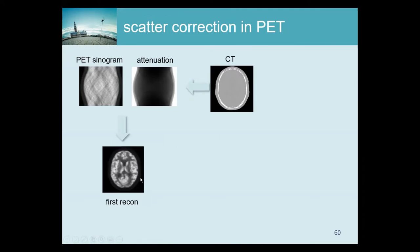With this information we can make a first MLM reconstruction. Now this image is going to have too much activity, and the reason is that part of the counts in the sinogram are not trues but scatters. So we should not have used them — they're still in there, so we overestimate the activity.